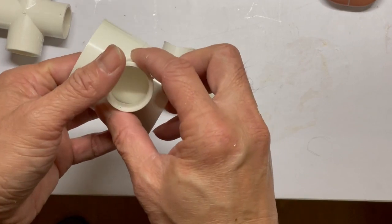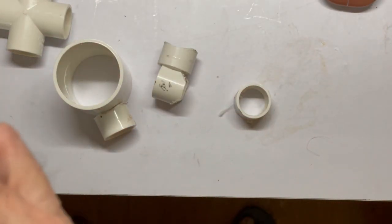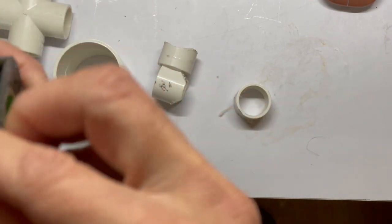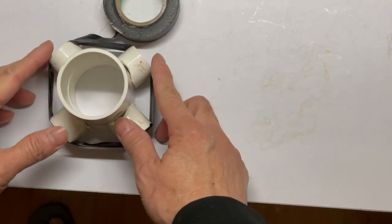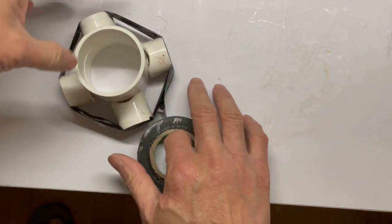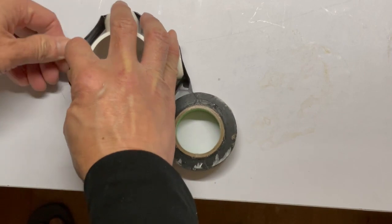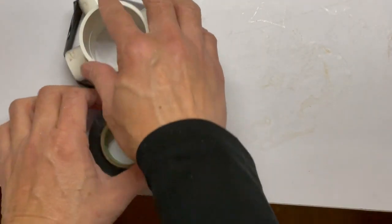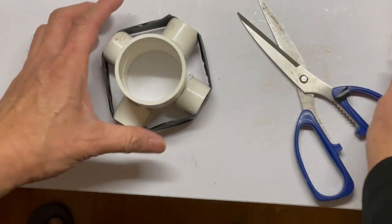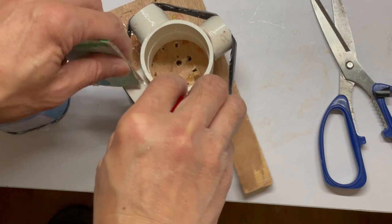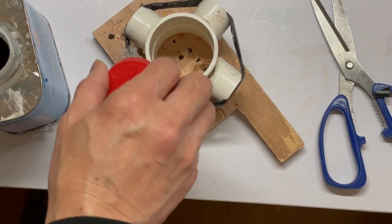To allow us to glue it easily, we will use this duct tape to secure it in place. So we will use this PVC glue to glue them together, then we will let it dry for around 12 hours.